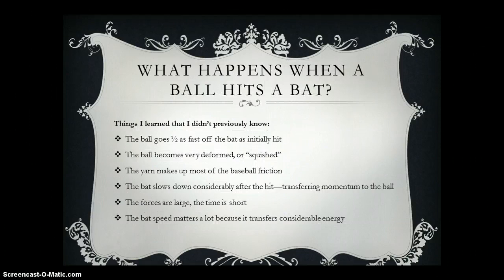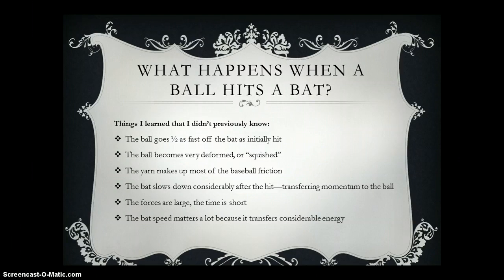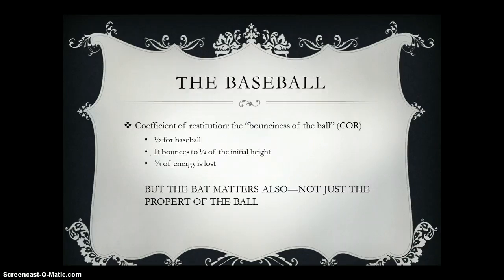Things I learned that I didn't previously know: the ball goes half as fast off the bat as it's initially hit. The ball becomes very deformed or squished. The red yarn makes up most of the baseball's friction. The bat slows down considerably after the hit, transferring momentum to the ball. The forces are large but the time is short, and the bat's speed matters a lot because it transfers a considerable amount of energy to the ball.